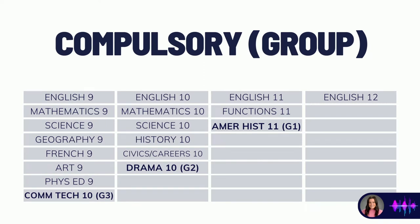On screen you can see an example of a student who selected their three group credits over four years. In grade 9, based on our Crestwood program, they automatically got their Group 3 by taking comm tech. In grade 10, they selected drama, which knocked off the Group 2 credit. And then in grade 11, the student decided to take American history, which knocked off the Group 1.